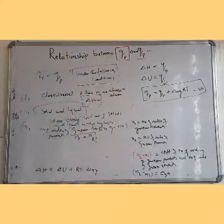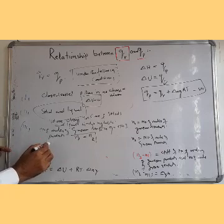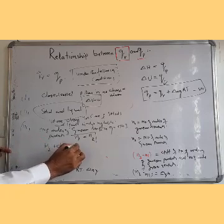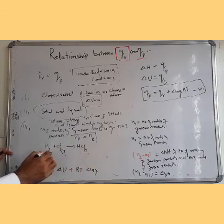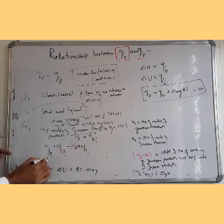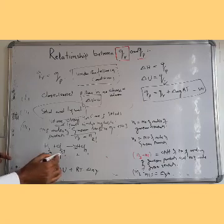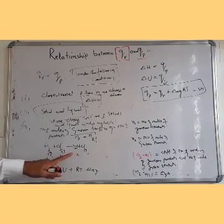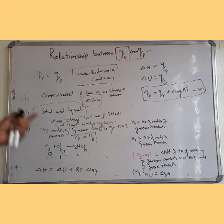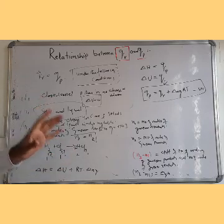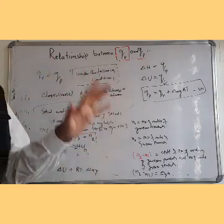For example, H2 plus Cl2 gives 2HCl. Here the number of moles of reactants is 2 and the number of moles of products is 2, so N2 minus N1 equals zero, and therefore QP equals QV. This concludes the relationship between QV and QP.